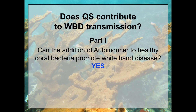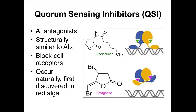Can the addition of autoinducer to healthy coral bacteria promote white band disease? My research indicates yes. Moving on, there are also molecules called quorum sensing inhibitors — autoinducer antagonists, the opposite of autoinducers. When a QSI binds to bacteria, it blocks the receptor, stopping that signaling cascade so gene expression does not occur. I'm going to look at one specifically, a brominated furanone — I'll just call it a QSI. These occur naturally and were first discovered in a red alga, but I obtained them from Sigma.